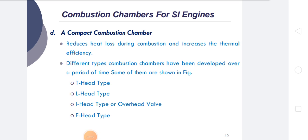Maximum volumetric efficiency can be obtained with maximum charge induction, for which large inlet and exhaust valves are used. Minimum flame travel reduces heat loss — this requires proper location of the spark plug and a compact combustion space. Minimum heat loss from the combustion chamber is achieved by proper spark plug location, meaning a smaller surface-to-volume ratio. The rate of pressure rise must remain within a maximum limit during combustion so that engine operation is smooth.